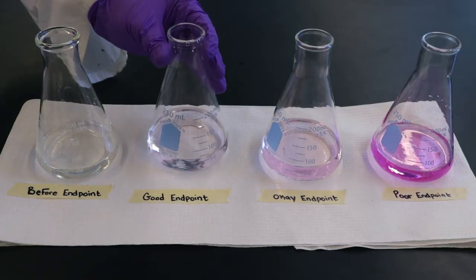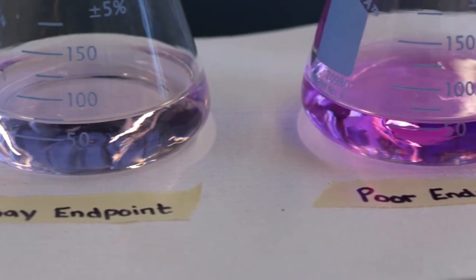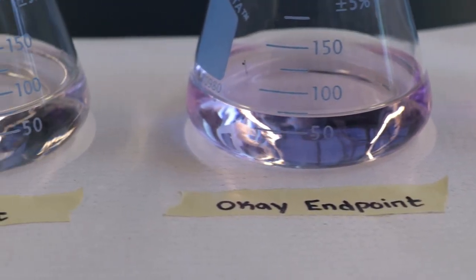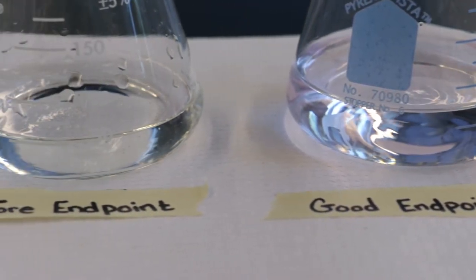A deep pink color indicates that you over-titrated. If you are adding the sodium hydroxide drop by drop and recording your volumes after each addition, you can go back to your previous volume immediately prior and use it as your endpoint.